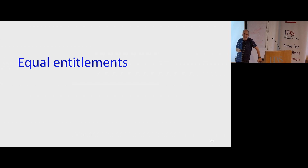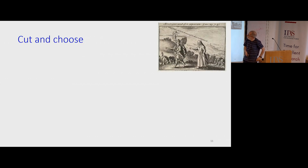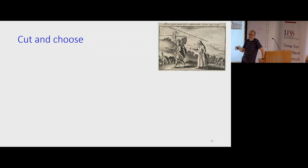We'll start by discussing the setting in which agents have equal entitlements to the items. Later we'll discuss cases where some agents are entitled to receive more than others. Perhaps the simplest game for allocations is the well-known cut-and-choose protocol. Here we have Abraham and Lot — in the biblical story, they are both in the land of Canaan and want to be in separate places. Abraham says he's willing to go either left or right, and Lot chooses which way to go, with Abraham taking the other.